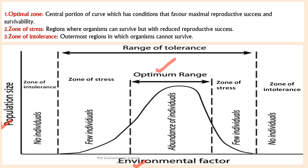The optimum range is the central portion of the graph where population size is at its peak, representing the range of the environmental factor where the species survives best, experiencing optimal growth and reproduction. The zone of stress is located on either side of the optimum range; conditions here are suboptimal, resulting in fewer individuals — species can survive but experience reduced reproductive success. The zone of intolerance is found at the extreme ends of the environmental gradient where conditions are beyond the tolerance limits, and no individuals are able to survive.